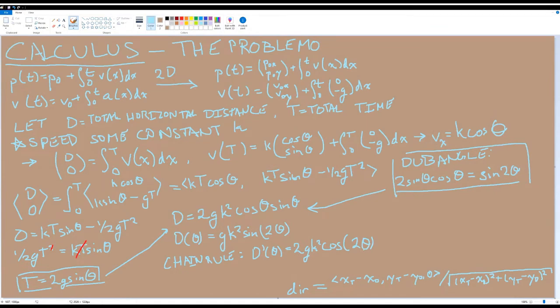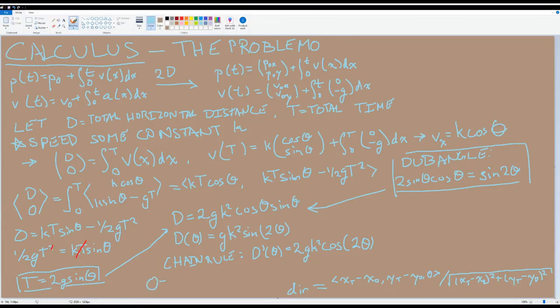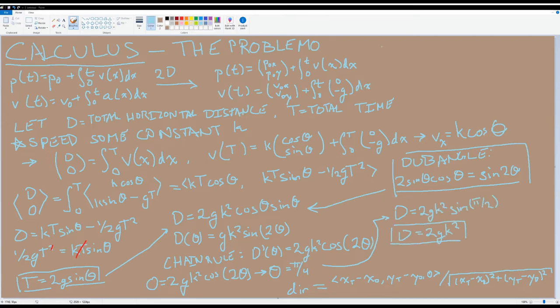Now, of course, we can get the derivative of capital D with respect to theta to find its maximum. We find that capital D prime of theta is equal to 2g times k squared times cosine of 2 times theta. Due to the problem itself, we will limit theta to 0 through pi over 2 for the obvious reason that we don't want to launch the projectile backwards or straight into the ground. Since we are intimately familiar with the graph of cosine, we know that cosine of theta crosses the horizontal axis at theta is equal to pi over 2 and 3 pi over 2 for theta bound from 0 to 2 pi. Thus, cosine of 2 times theta will cross it at theta is equal to pi over 4 for theta from 0 to pi over 2. Plugging that in, we get the following. Furthermore, we know it's the maximum instead of a minimum because before pi over 4 cosine 2 theta is positive and afterwards it is negative, meaning that D of theta will go from increasing to decreasing.